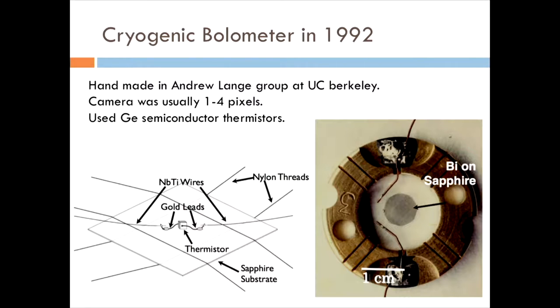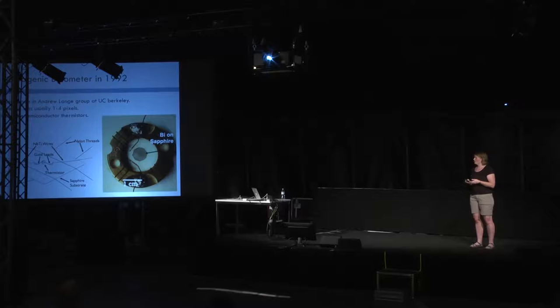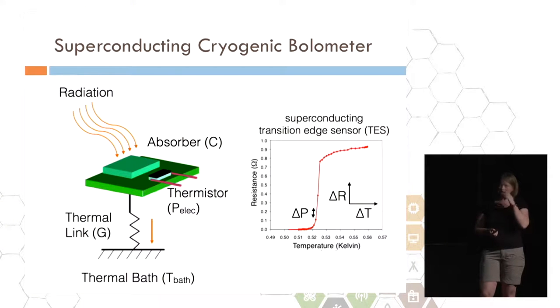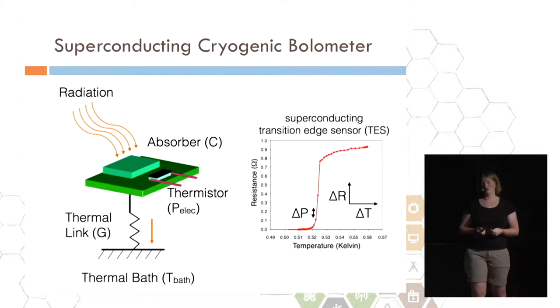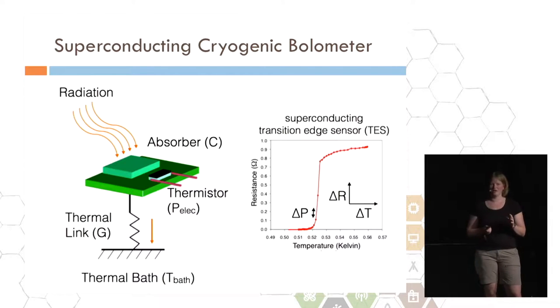This is what a bolometer looked like in 1992. Remember this is a mere 30 years ago. They were handmade by a small research group at Berkeley. Essentially, graduate students sat there with tweezers and lovingly assembled these things. They're made up of nylon threads that suspend a very small membrane that has a thermistor in the middle. This is using a germanium semiconductor thermistor. Essentially, what it is is it's a thermometer where when it changes temperature, the resistance changes and you can measure that change in resistance and figure out how much power has hit your detector. But it was not exactly background limited. It was very close, but it wasn't perfect. There was still some extra thermal noise.